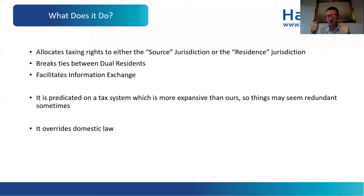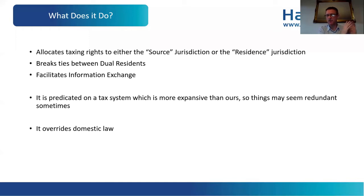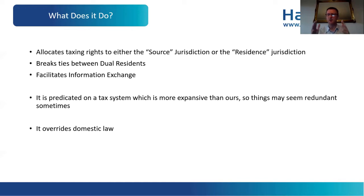That structure means it's no longer possible to have double taxation. It also has tiebreakers for dual residents. Somebody could easily be resident in both the UK and Gibraltar — the UK statutory residence test is quite complex. You need to break a tie to correctly allocate taxing rights to the resident jurisdiction or to the source jurisdiction. Thirdly, the treaty facilitates information exchange: there's an information exchange article in the 20s which provides a framework for exchanging information.